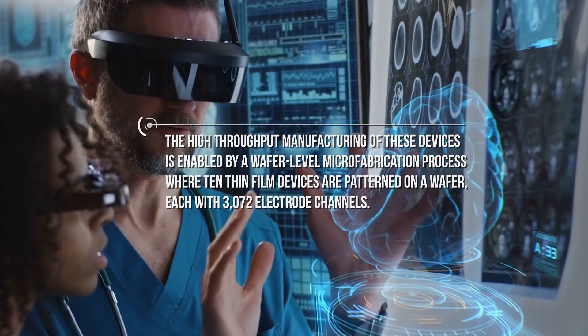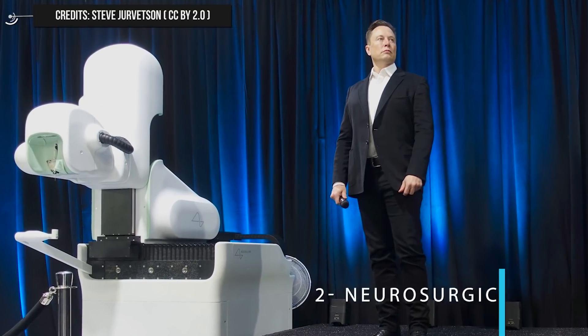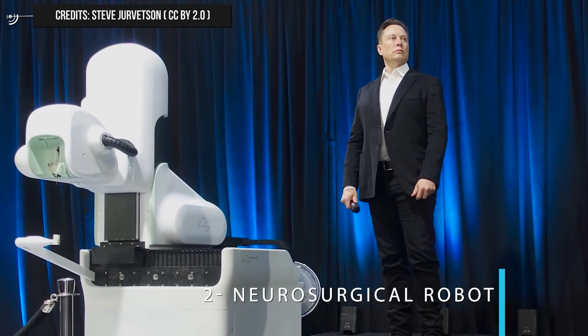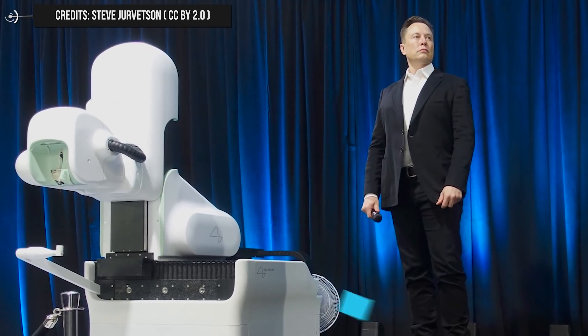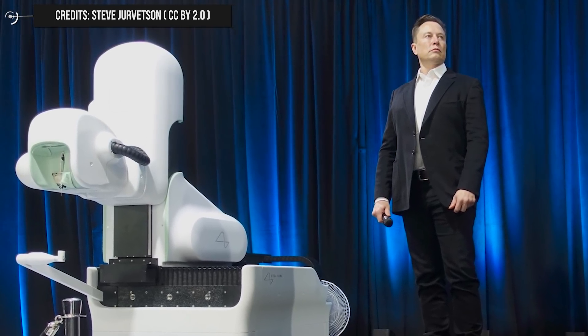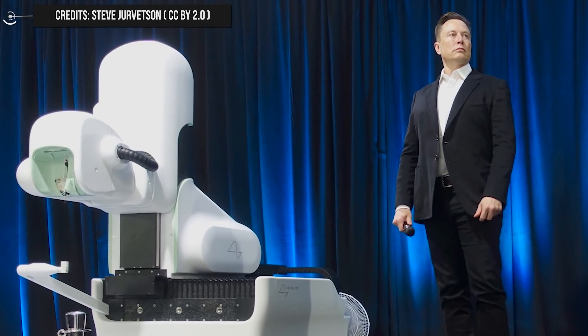Second, the neurosurgical robot, which is developed by Neuralink to allow rapid and reliable insertion of large numbers of polymer probes without compromising the safety of the vasculature surface and to target very specific brain regions.